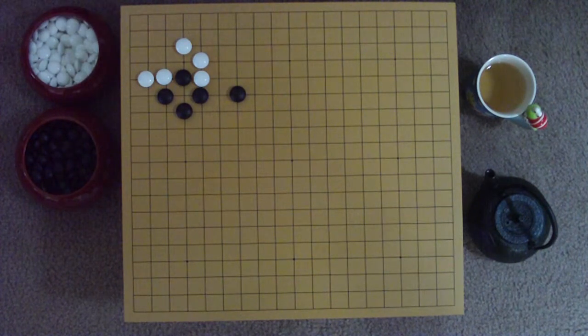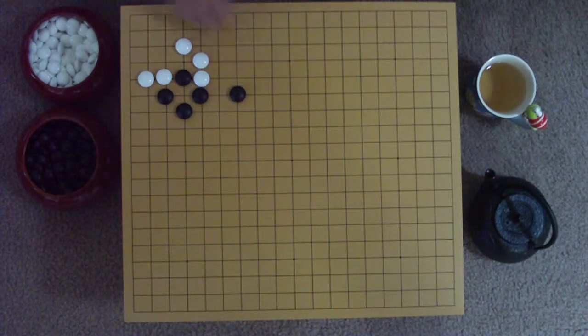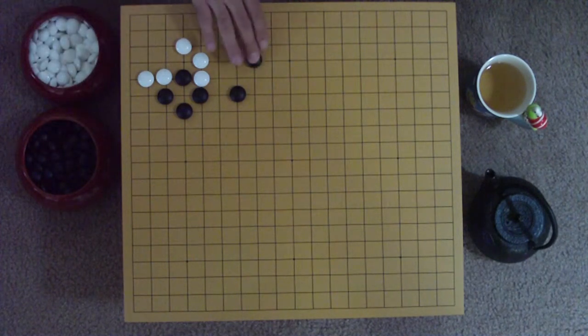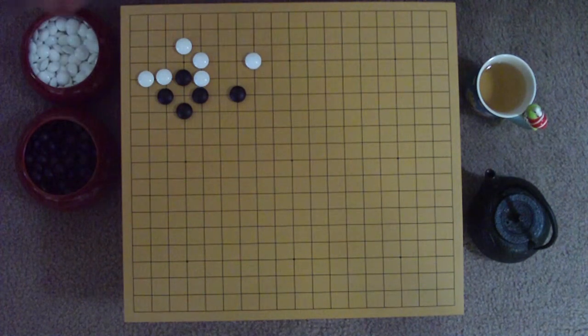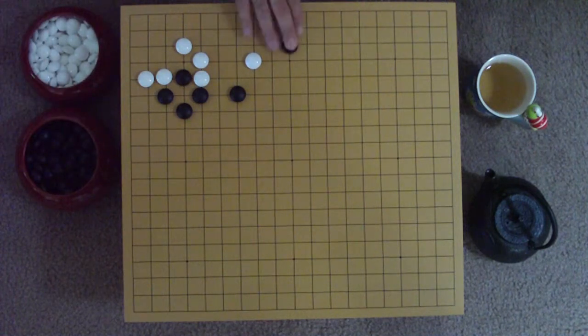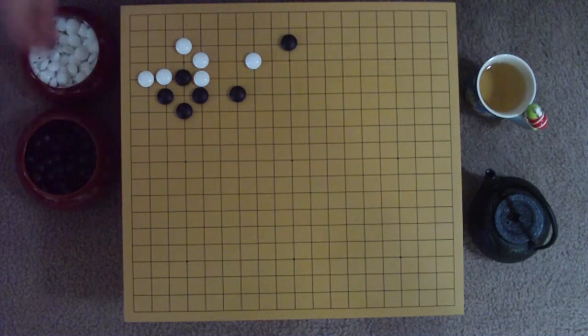Black still has the initiative and continues to put pressure on White's structure by making a one-point jump outward from her diamond shape. If White does not make a two-point leap outward on the 4th line, then Black may play there herself and completely seal off White's corner territory. And even then, Black may approach from the left side along the 3rd line at a 9th distance, aiming toward another 2-point jump invasion toward the corner.